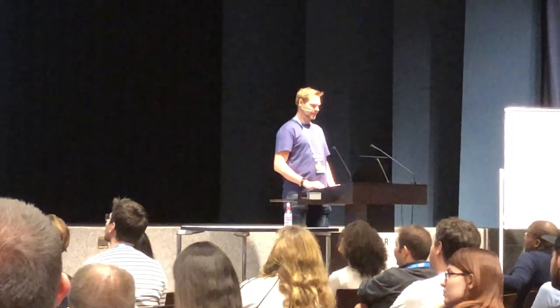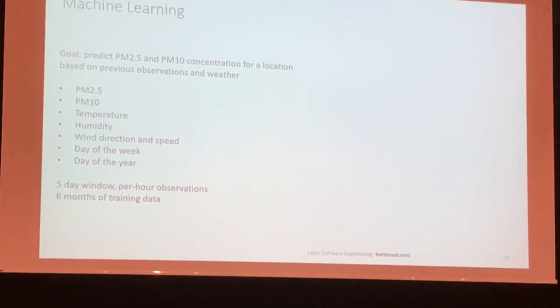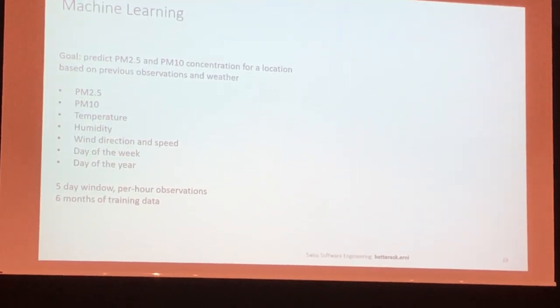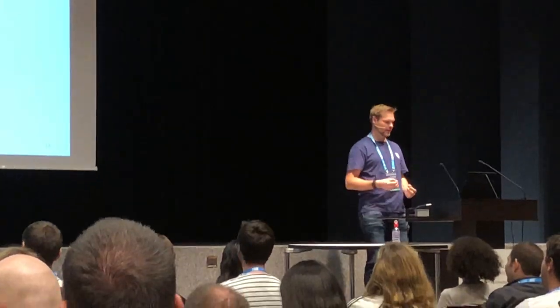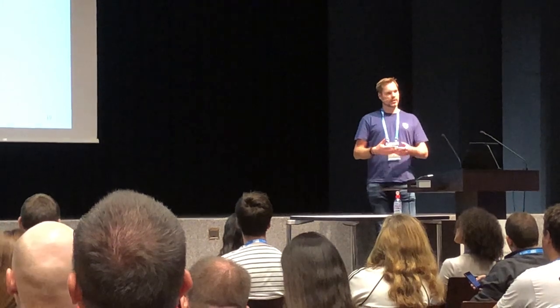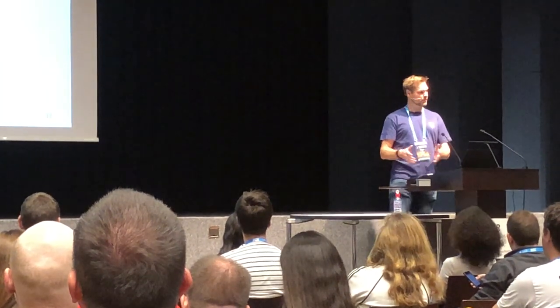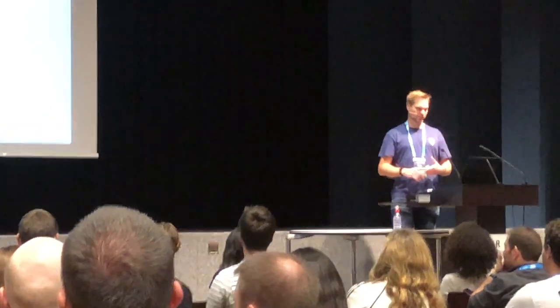Now with that data available, we can start doing predictions using machine learning. We need to predict both PM2.5 and PM10 particle sizes for a specific location. We decided to focus on one location rather than multiple, for two reasons: first, pollution is high when there is no wind, so there shouldn't be much movement of particles between places; second, we don't want to overcomplicate this — it's an MVP, not a full product. So we focus on predictions for one specific location.